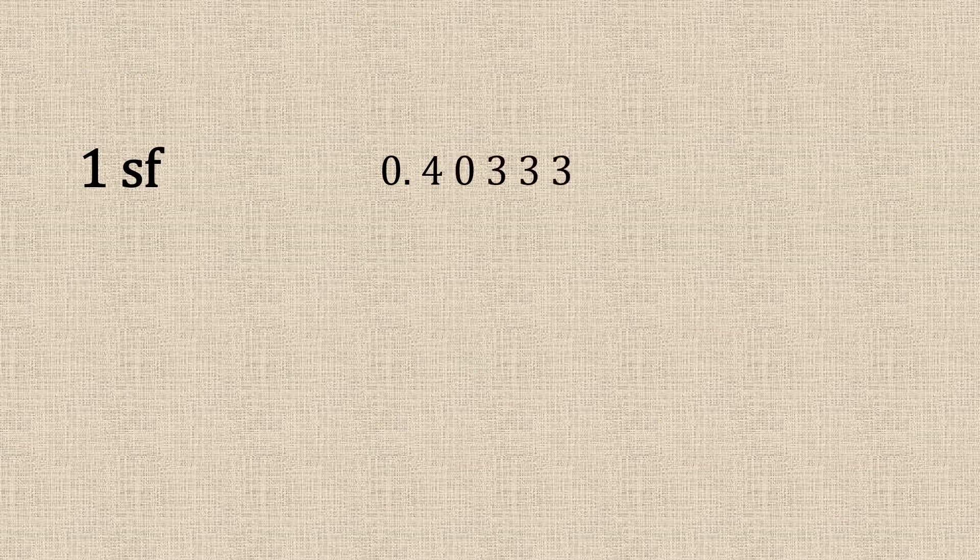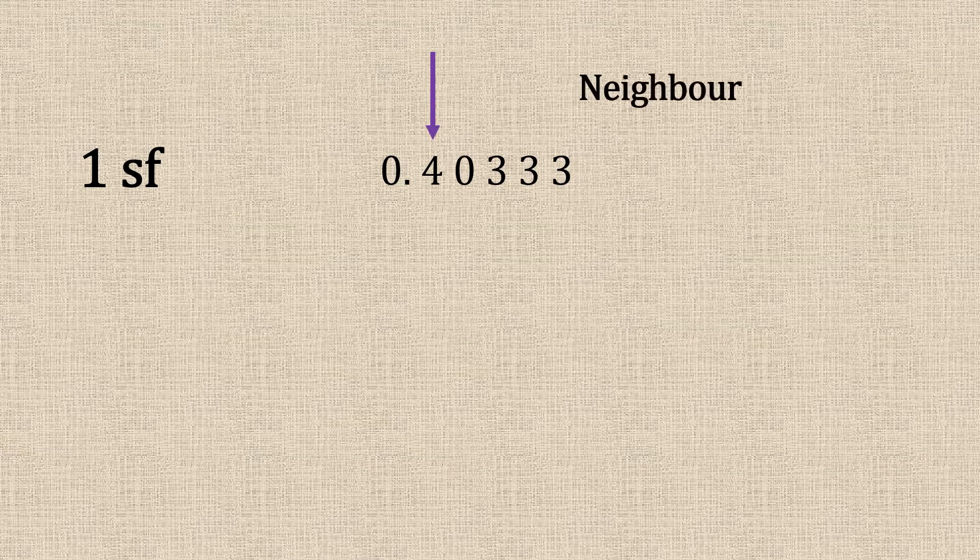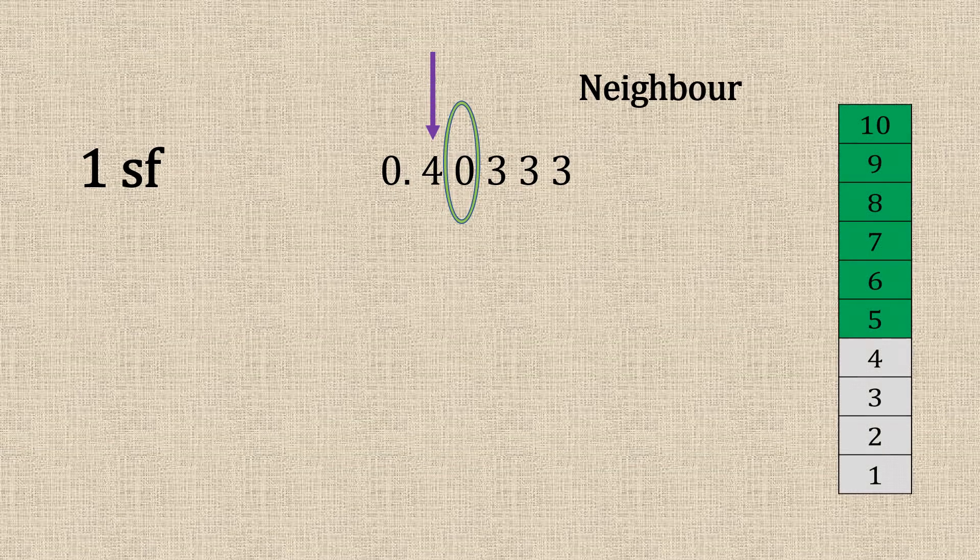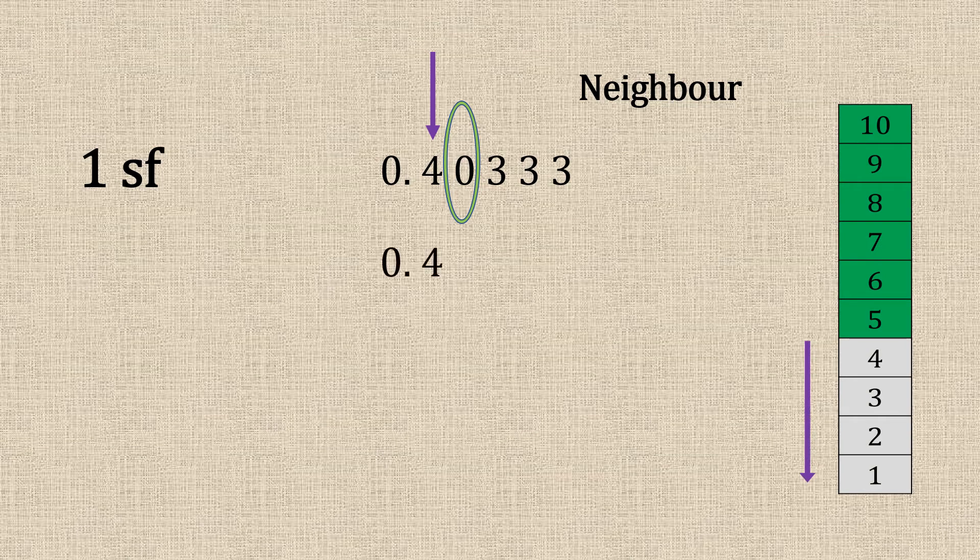So let's have a look. One significant figure. It's a four. Neighbour's a zero. So that's four or below. So we let it go. 0.4.